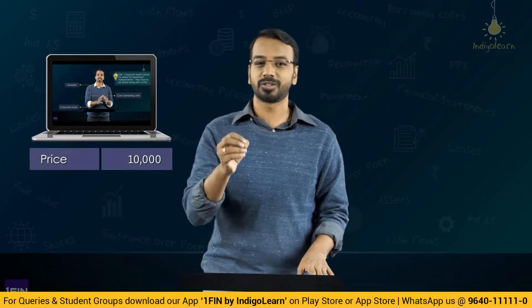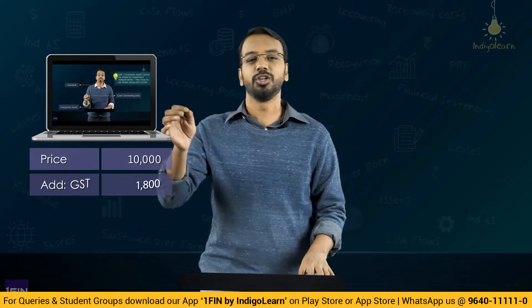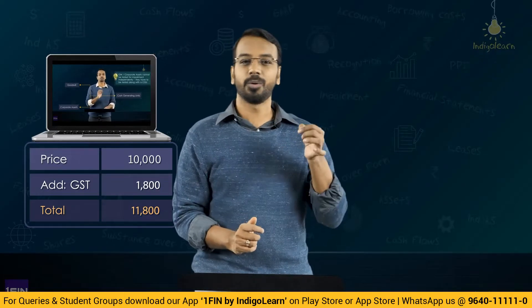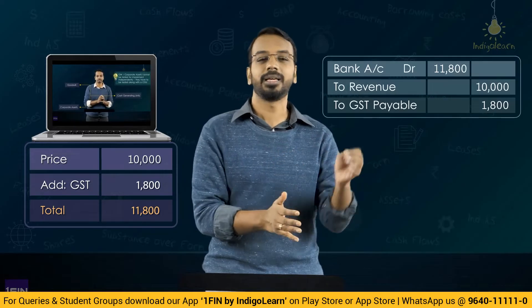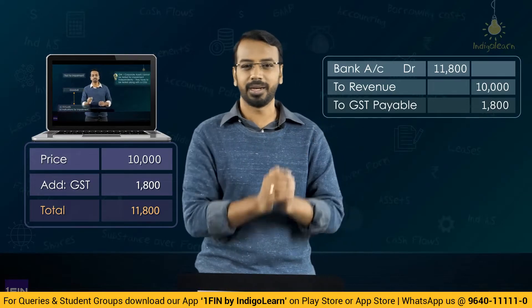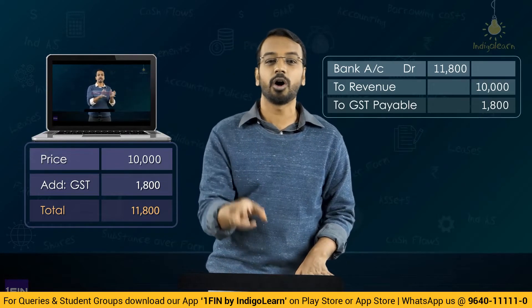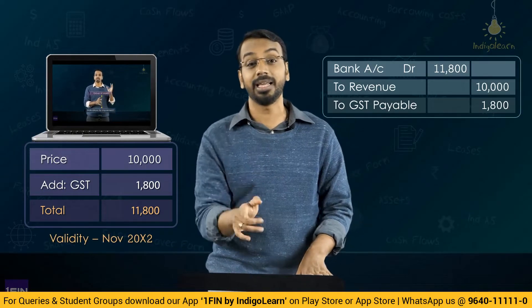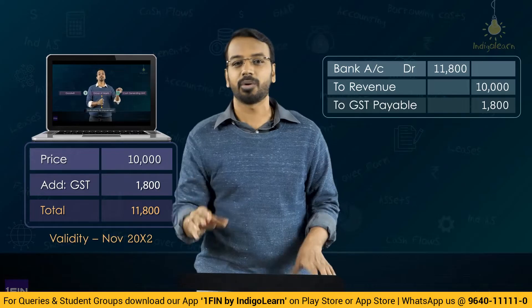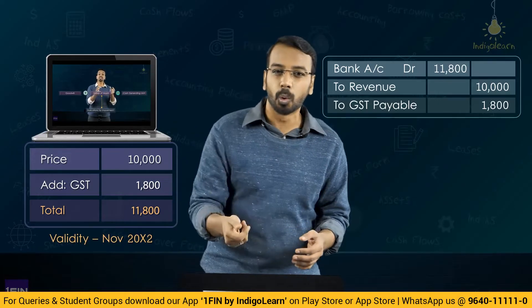Say for example, you purchased a course from our website. For argument's sake, let us say the price is ₹10,000 and 18% GST is applicable, so you paid ₹11,800. We gave you course access. A simple accounting entry for IndigoLearn would be: bank account debit ₹11,800, to revenue ₹10,000 and GST payable ₹1,800. But is this course valid only for this accounting year? Not necessarily. If it is valid till the November attempt coming after 2 years, then the entire ₹10,000 revenue is not pertaining to year 1 alone — it pertains to multiple years.